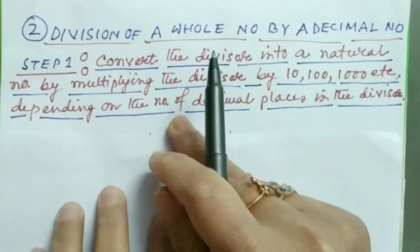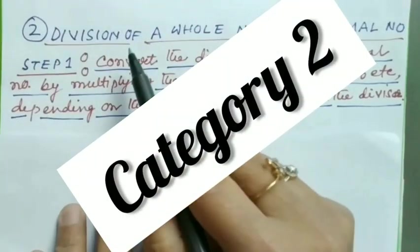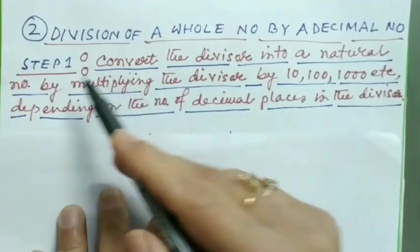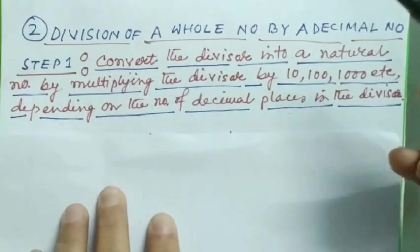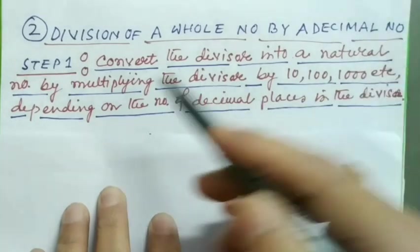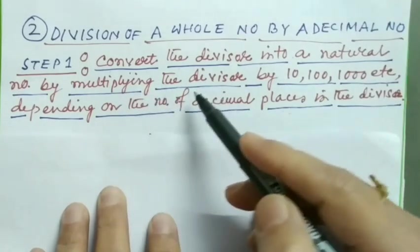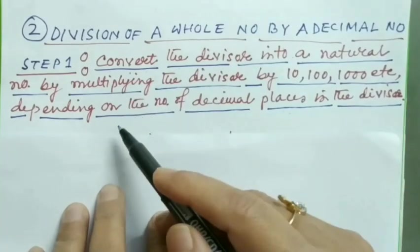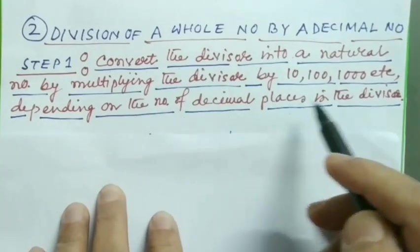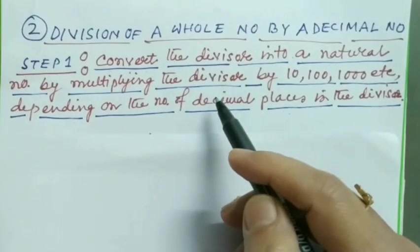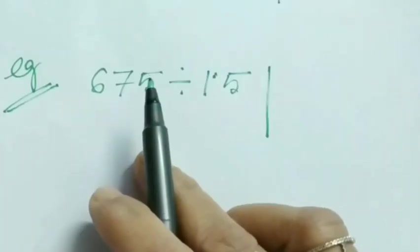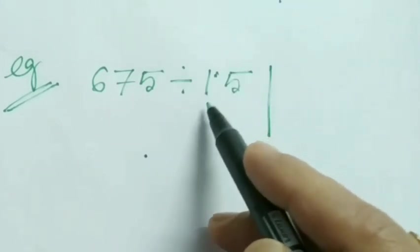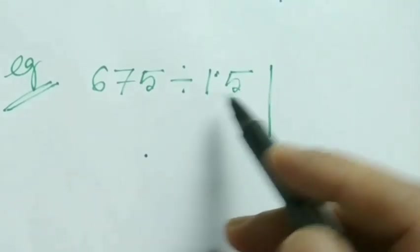Category number two: Division of a whole number by a decimal number. Step number one: Convert the divisor into a natural number by multiplying the divisor by 10, 100, 1000, etc., depending on the number of decimal places in the divisor.